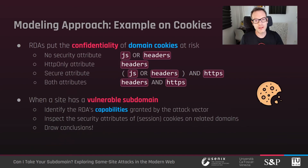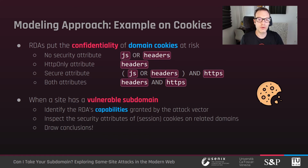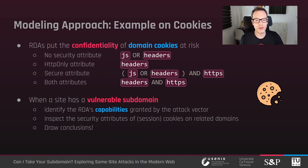Related domain attackers are clearly sitting in a privileged position to violate the confidentiality of domain cookies. If the domain attribute on a cookie is specified, the cookie is attached to requests to all the subdomains. The question is: what capabilities should the related domain attacker possess to read the cookie value, depending on the cookie attributes? If no security attributes are set, cookies can be read from JavaScript or by inspecting headers of incoming HTTP requests. The HTTPOnly flag prevents cookies from being accessed by JavaScript, so a related domain attacker must control a subdomain that allows headers to be inspected. When the Secure attribute is also enabled, the attacker must additionally control a site served over HTTPS.